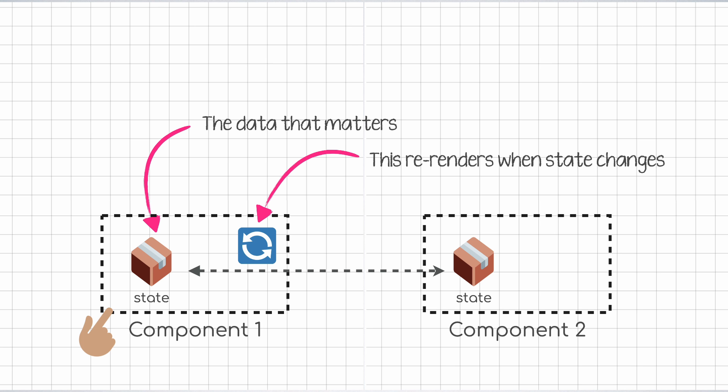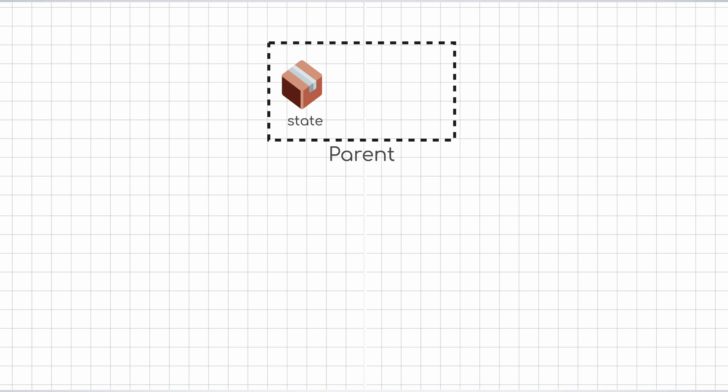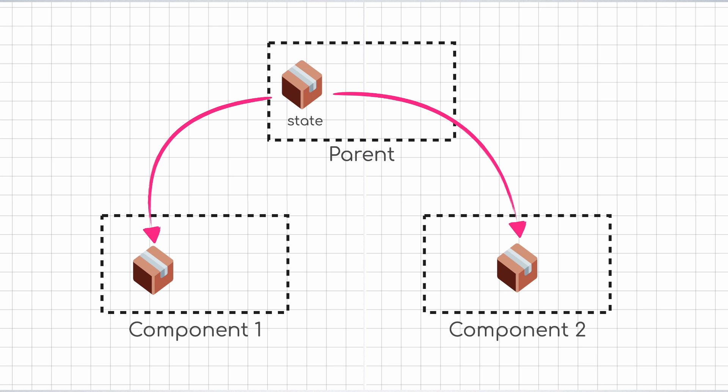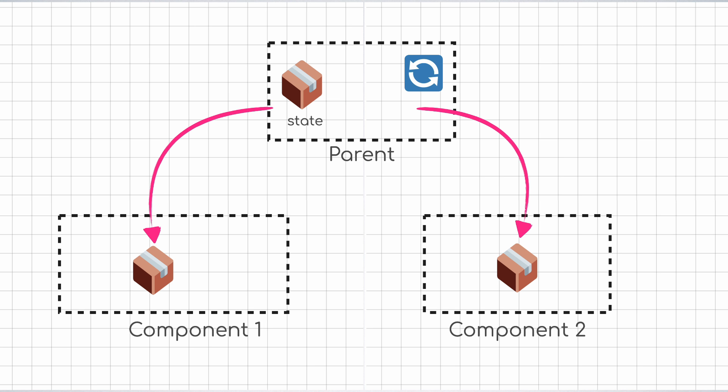But what if that data needs to be shared across two or more components? One solution is that we can move the state up to a parent component and pass it down as props to the two children. That way, when the state in the parent changes, it re-renders and passes the latest state to the children. But what if the modification of the state needs to be triggered from the children as well? In that case, we can also pass the setState function to the child components so that they can trigger it when required.